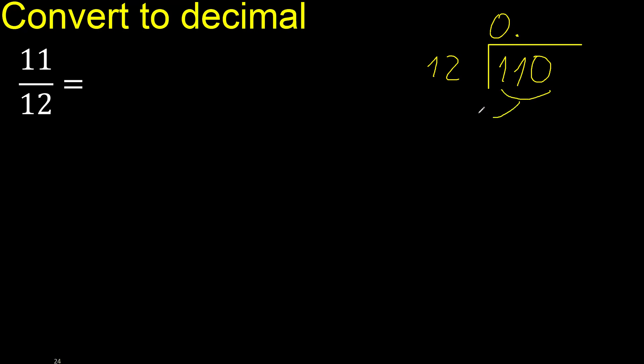110 is not less, therefore with 110. 12 multiplied by which number is nearest to 110 but not greater? 12 multiplied by 9 is 108, it is not greater.